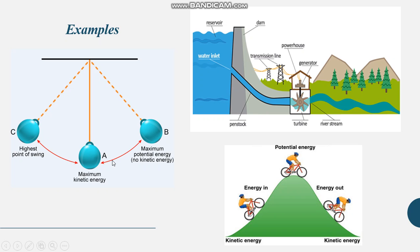As the pendulum goes from A to B, the kinetic energy gets converted to potential energy at B. Coming back, potential converts to kinetic. So from C and B, there is potential energy; at A, there is kinetic energy; and from A to B and A to C, we always have both kinetic plus potential energy. I hope everyone is clear with the examples.